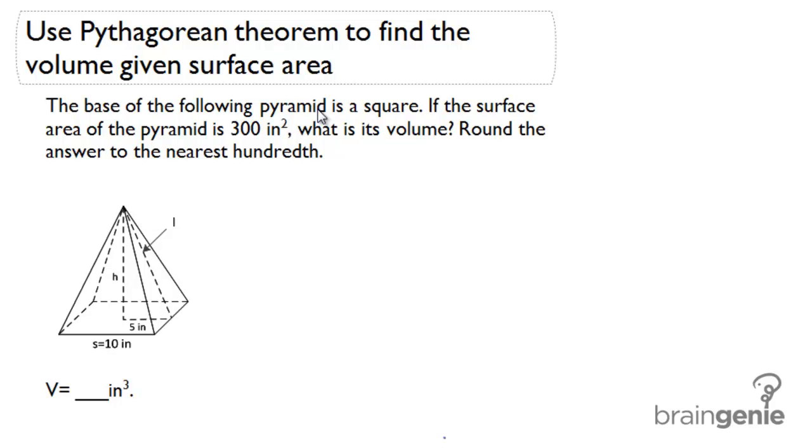For this problem, we're going to find the volume given the surface area. Let's read the problem. The base of the following pyramid is a square. If the surface area of the pyramid is 300 square inches, what is the volume? Round your answer to the nearest hundredth.